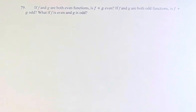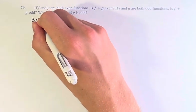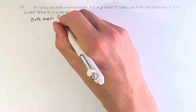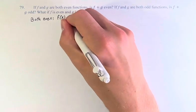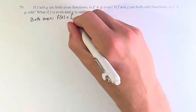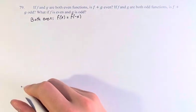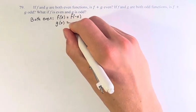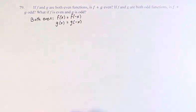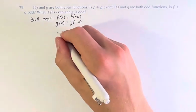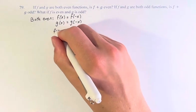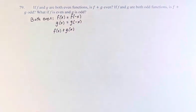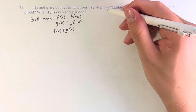So first, let's start with both even. This means that f of x is equal to f of negative x, and g of x is equal to g of negative x. What about f of x plus g of x — is this even?